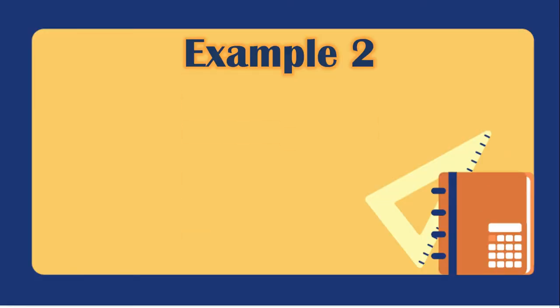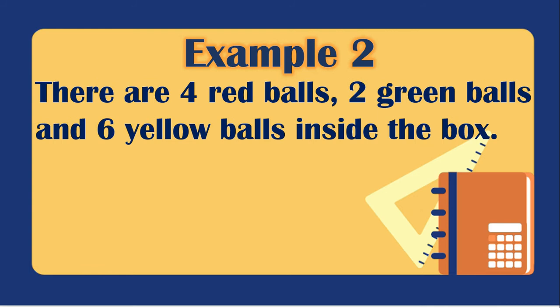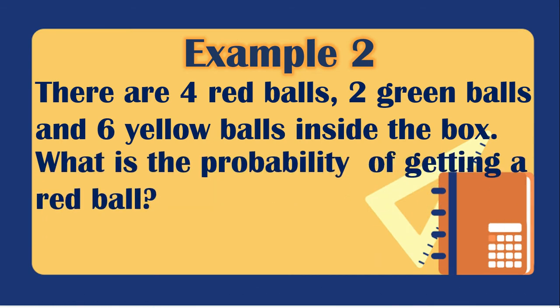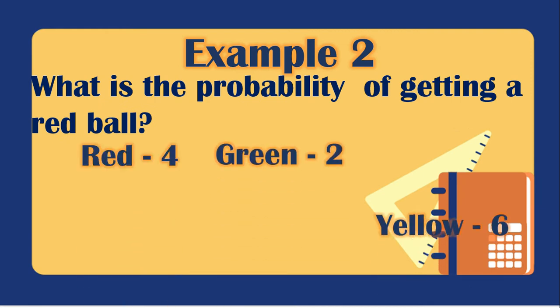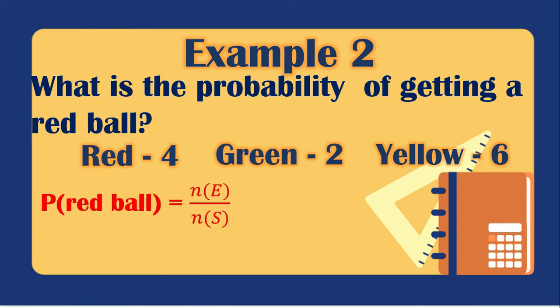Example 2: There are 4 red balls, 2 green balls, and 6 yellow balls inside a box. What is the probability of getting a red ball? Using the formula, the favorable outcome is 4 red balls over the total of 4 + 2 + 6 = 12. So we have 4/12.